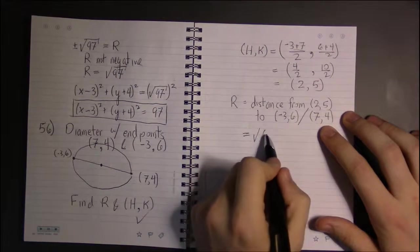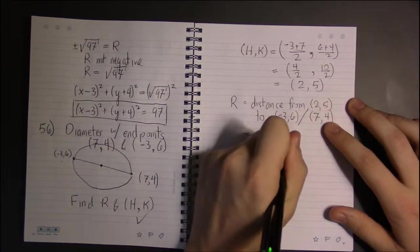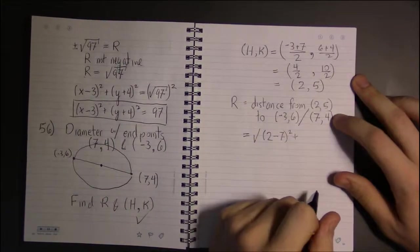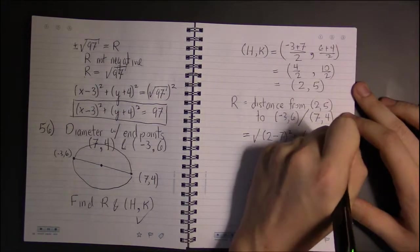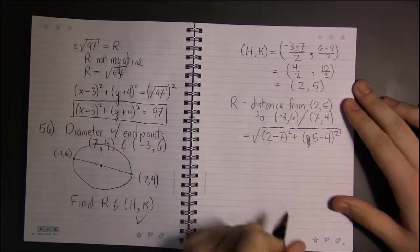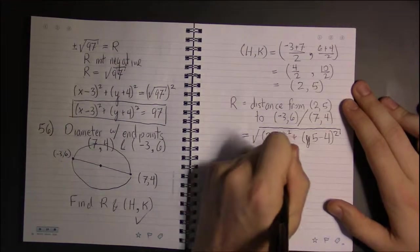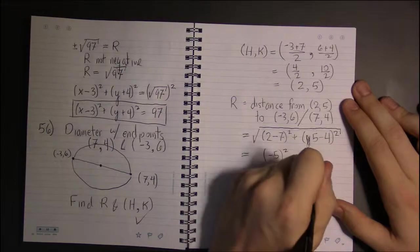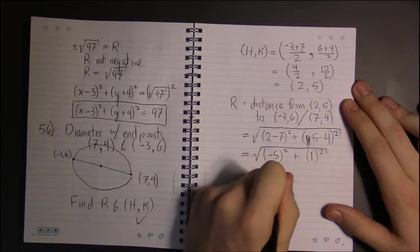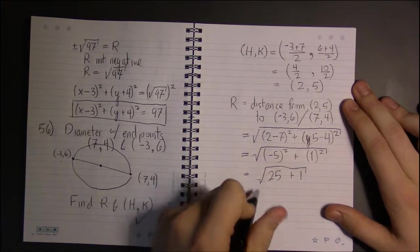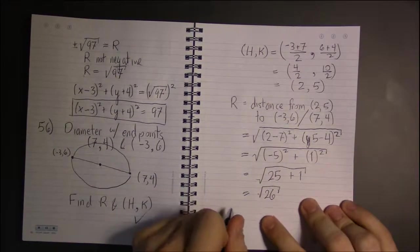So remember, distance is square root of x1 minus x2, 2 minus 7, plus y1 minus y2. Or y2 minus y1, it doesn't matter. All right, let's work it out. Minus 5 squared. 5 minus 4 is 1, going to square that. So this is 25 plus 1, which is 26. So if R is the square root of 26, then that's good. Go to the next page.